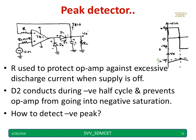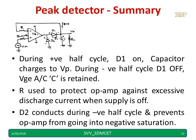To detect a negative peak, simply change the diode polarities.